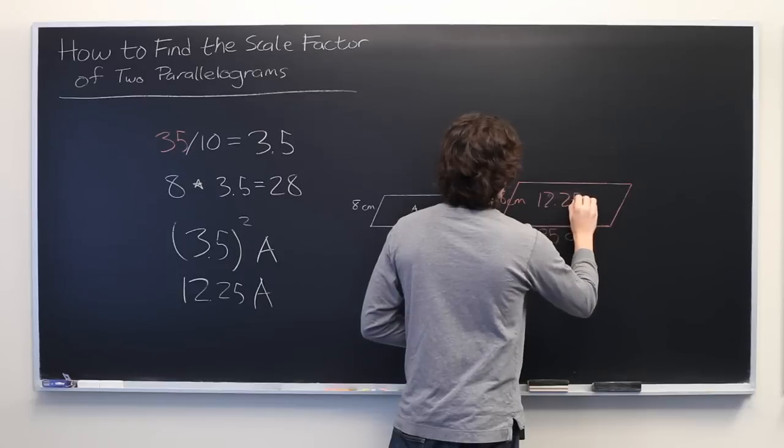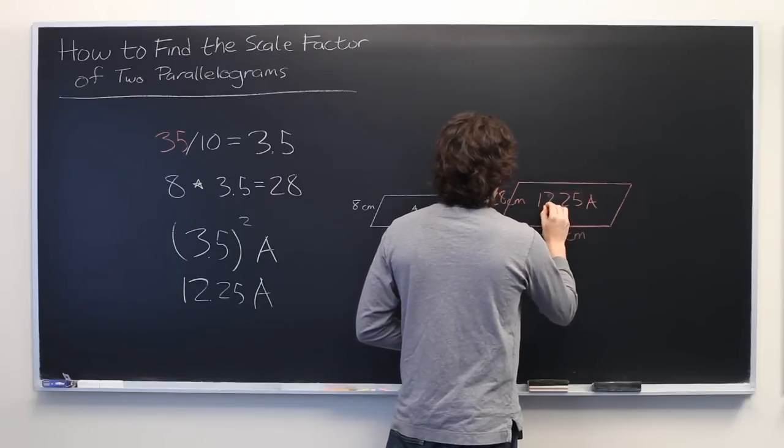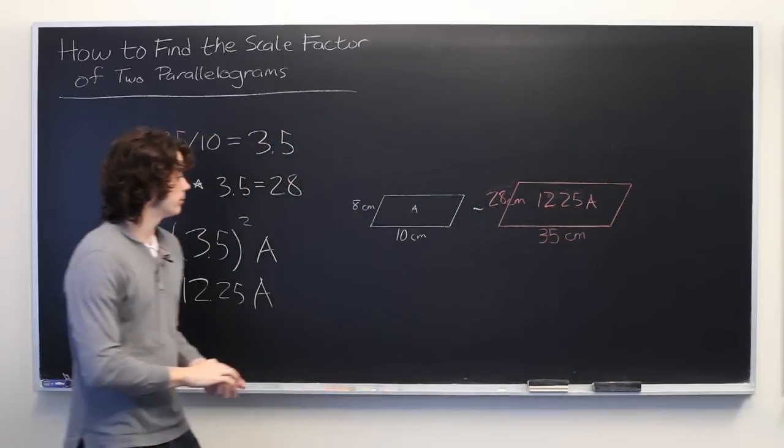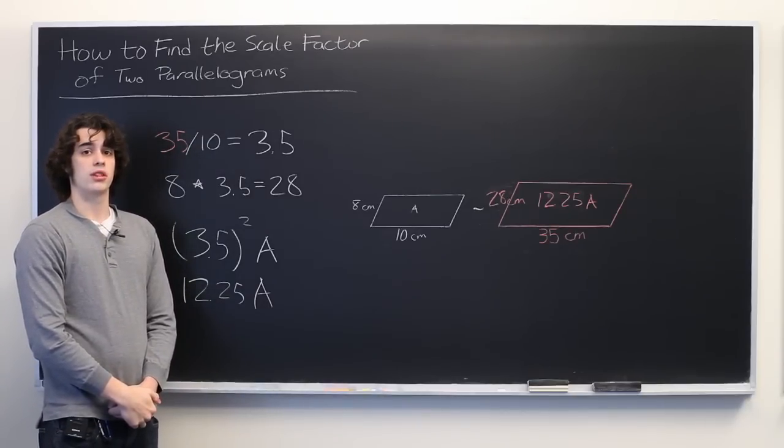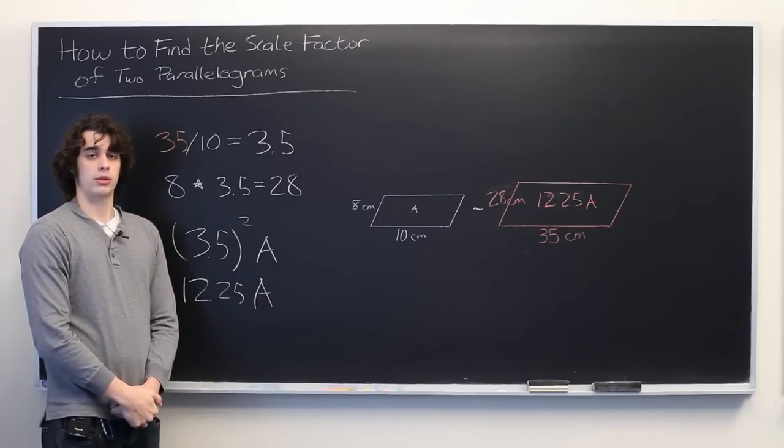12.25 times A. And that's all there is to it. My name is Ryan Malloy, and we've just discussed how to find the scale factor for two parallelograms.